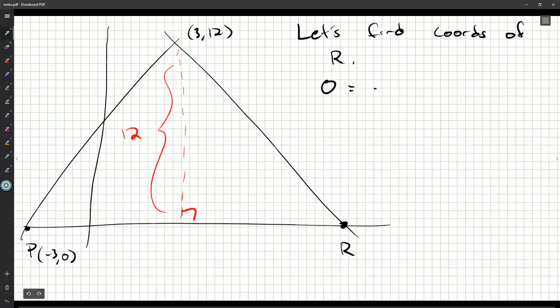So 0 equals negative 3x plus 21. So 3x is 21, divided by three, x is seven. So R is at (7, 0). Now add that in down here. And so now this base, the distance PR is going to be seven minus negative three, and that's 10.